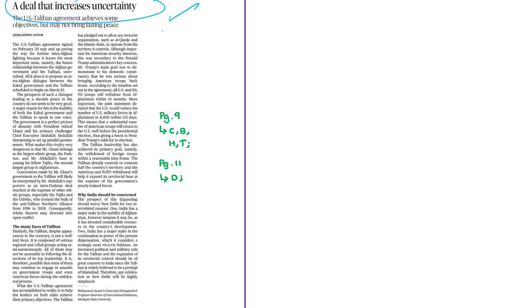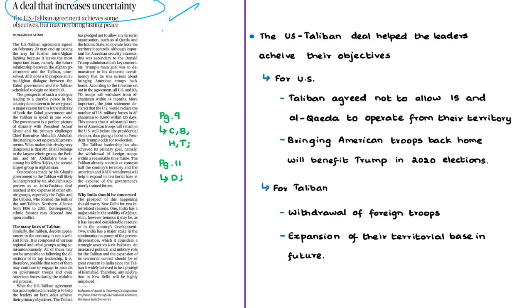The second editorial, titled 'A Deal that Increases Uncertainty,' focuses on both the achievements and the uncertainties of the US–Taliban deal. According to its author, the deal helped leaders of both sides achieve their primary objectives. The deal benefits the US because the Taliban agreed not to allow groups such as IS and Al-Qaeda to operate from its territory, and all US and NATO forces will withdraw within 14 months, with forces reduced to 8,600 within 135 days.